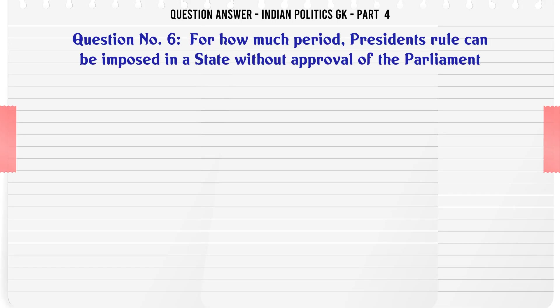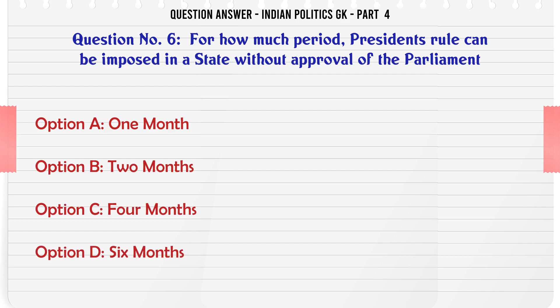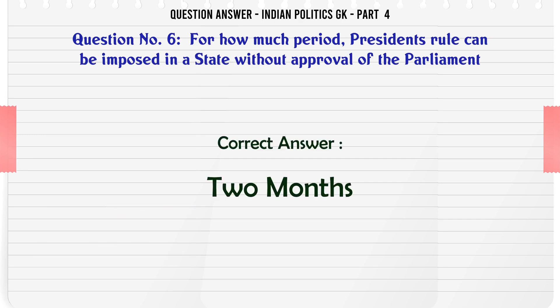For how much period can President's rule be imposed in a state without approval of the Parliament? A. 1 month. B. 2 months. C. 4 months. D. 6 months. The correct answer is 2 months.